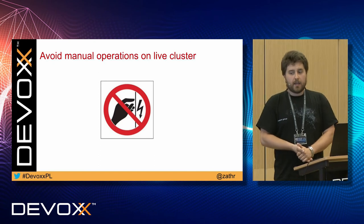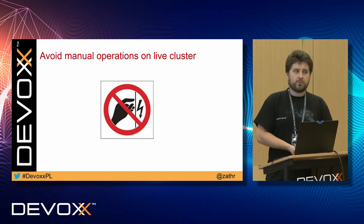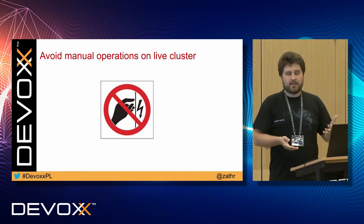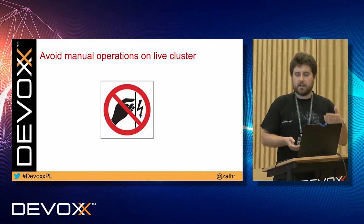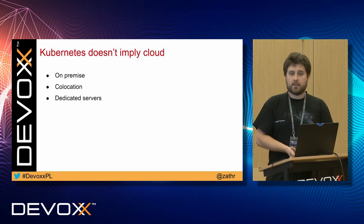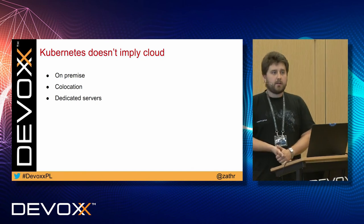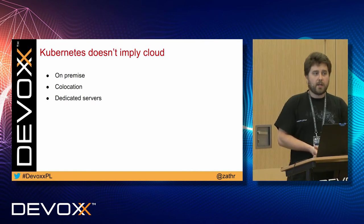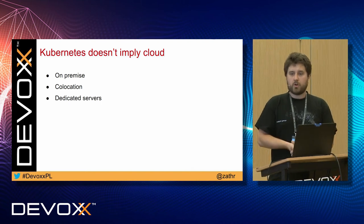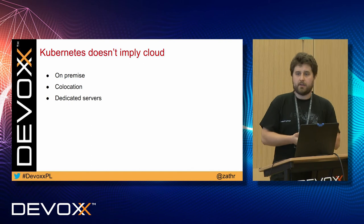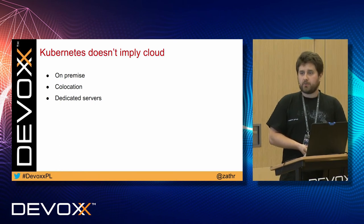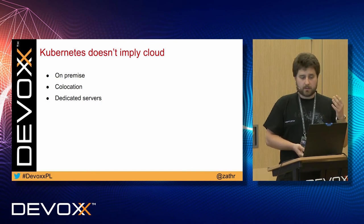Now for a couple of don'ts. Avoid manual operations on a live cluster. Use scripts, use Ansible. We have been using kubespray for a while and it works like a charm. Try not to use anything that's not repeatable and that you cannot check in your sandbox first. Kubernetes doesn't imply a cloud — we have been running clusters on bare metal from the beginning, and while there were some issues, it saved us a lot of money. If you are fine with scalability like a new server within 24 hours, you're good to go with dedicated servers — like we do in Hetzner.